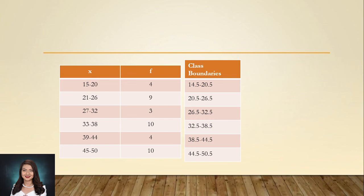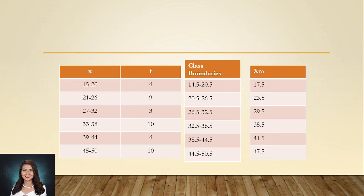Now we compute the class marks using the formula X_M = (LL + UL) / 2. For 15–20: (15 + 20) / 2 = 25 / 2 = 17.5. For 21–26: (21 + 26) / 2 = 23.5. For 27–32: (27 + 32) / 2 = 29.5. For 33–38: (33 + 38) / 2 = 35.5. For 39–44: (39 + 44) / 2 = 41.5. For 45–50: (45 + 50) / 2 = 47.5. Those are our class marks.